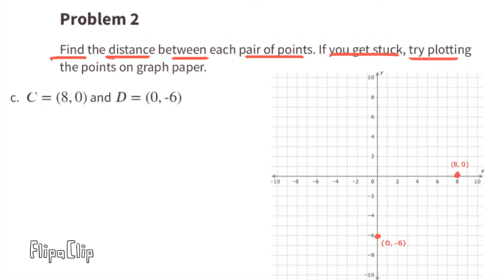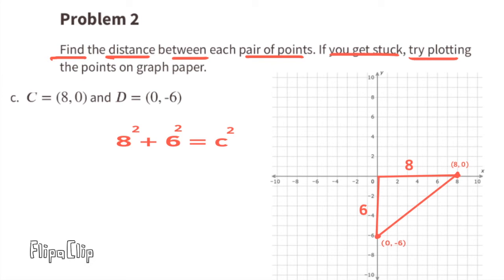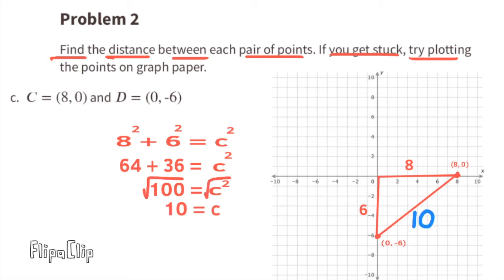We'll do the same for C, because these two points also have a vertical difference and a horizontal difference. We form a right triangle and use the Pythagorean theorem with the two legs: 8 squared plus 6 squared equals the distance squared. 8 squared is 64, 6 squared is 36, and 64 plus 36 equals 100. The square root of 100 is 10, so the distance between these two points is 10 units.